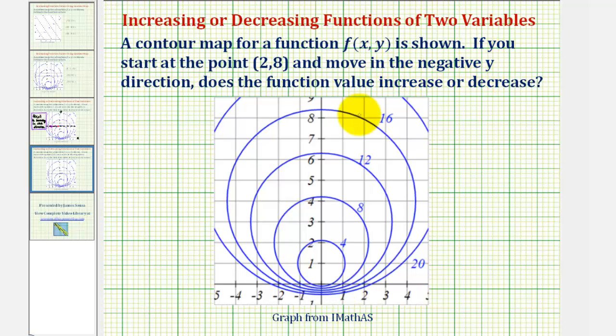So the point two eight is here, notice how at this point the function value is 16. And now because we're moving in the negative y direction, let's sketch a vertical line that's parallel to the y axis, which would be here.